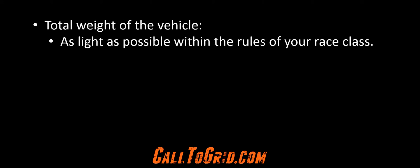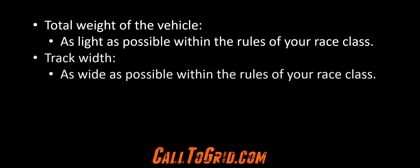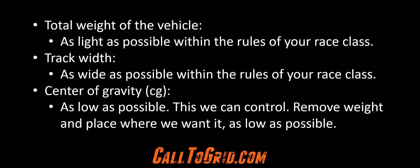For vehicle weight, you want to run as light as possible. The idea is to remove weight, then add weight back to the car to meet the rules for your race class. But when you add the weight back, you are adding it where you want it — as low as possible. For track width, you want to run as wide as the rules of your class allow. For center of gravity, we want this as low as possible, which we can control based on where we put the weight to meet the rules of our race class. Opportunities to remove weight are limitless.